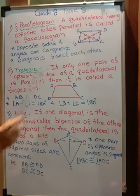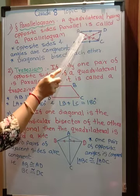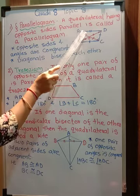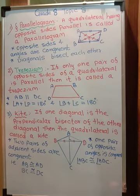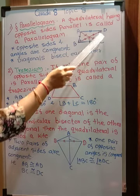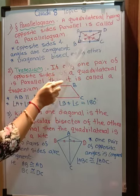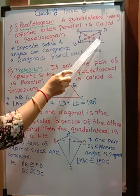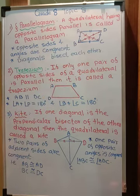Opposite sides are congruent as well as parallel. One more thing to remember: if AD is parallel to BC and AB is considered a transversal, then angle A and angle B are co-interior angles, and if lines are parallel, interior angle sum is 180 degrees. So angle A plus angle B is 180. Similarly, angle A plus angle D is 180, angle B plus angle C is 180, and angle D plus angle C is 180. And the equal pairs are: B equals D, A equals C.